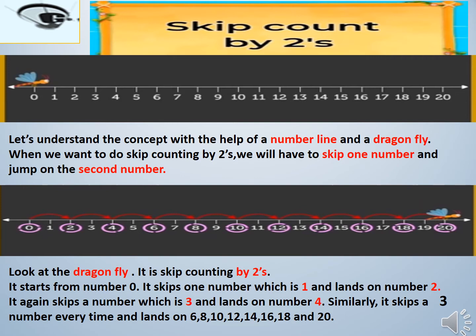The dragonfly is getting very late and wants to reach twenty in less time. It starts from zero, skips one — which is one — and lands on two. It skips three and lands on four. Similarly, it skips a number each time and lands on six, eight, ten, twelve, fourteen, sixteen, eighteen, and finally twenty, reaching its destination in less time.